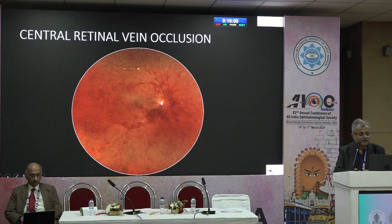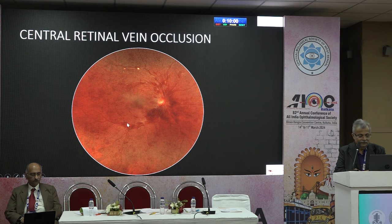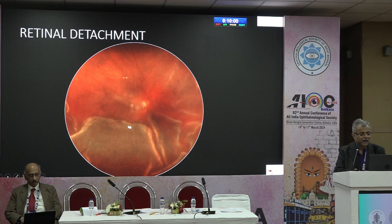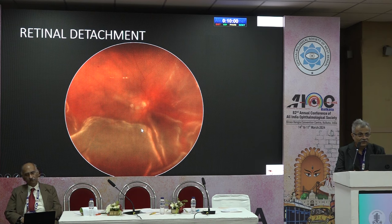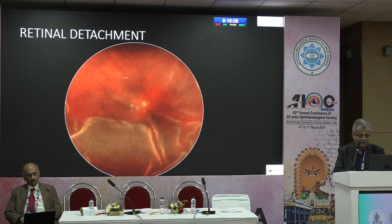These are typical central retinal vein occlusion where hemorrhages are all around, and there could be branch retinal vein occlusion where hemorrhages are in one quadrant. Vision loss is because of macular edema. This is a classic case of retinal detachment with a retinal tear. History is important — an intelligent patient will say they cannot see in a particular quadrant.